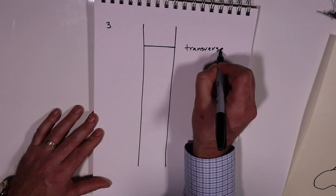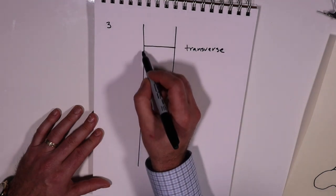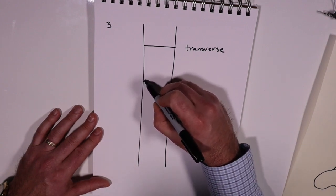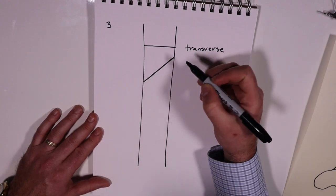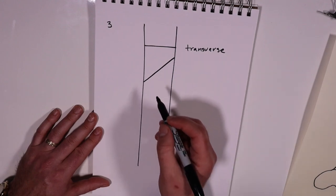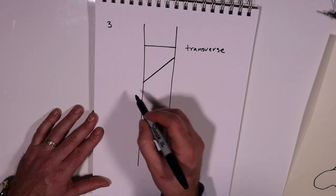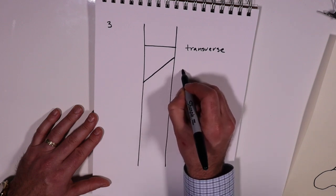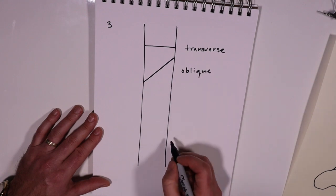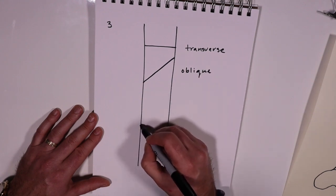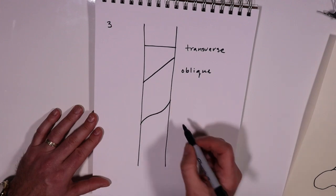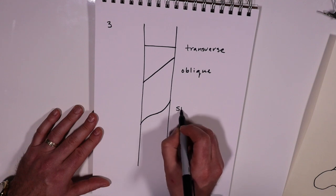One fracture pattern is transverse, and the fracture line is perpendicular to the cortex. Second type is where the fracture line is obliquely oriented to the cortex. It forms an angle, and that is an oblique fracture pattern. Then the next one is kind of a combination, it's a rotational, all right, and that is a spiral fracture.